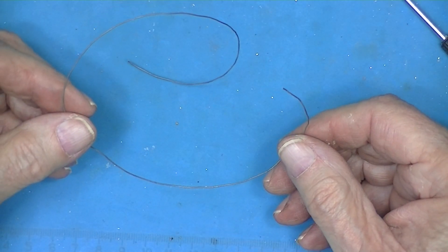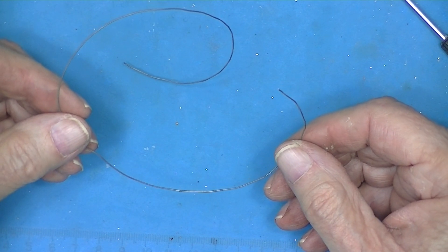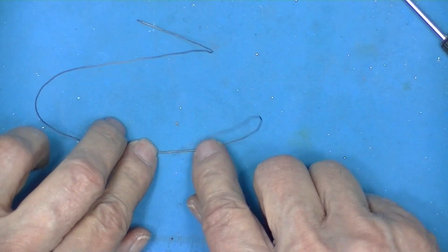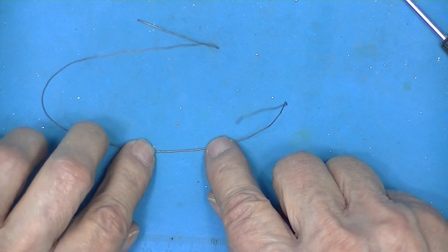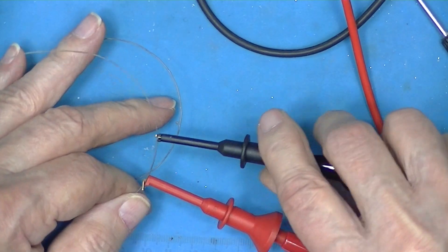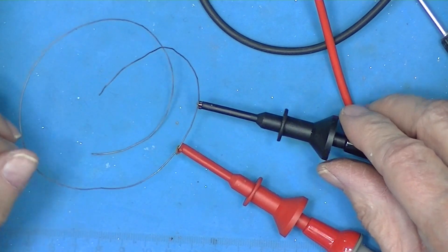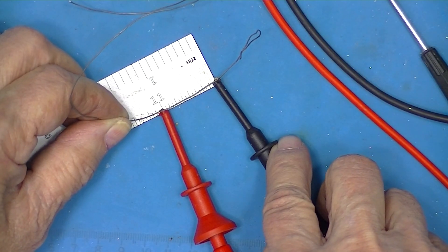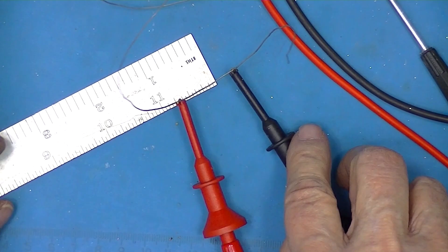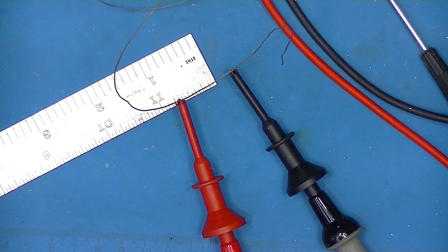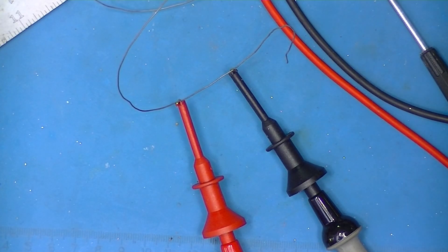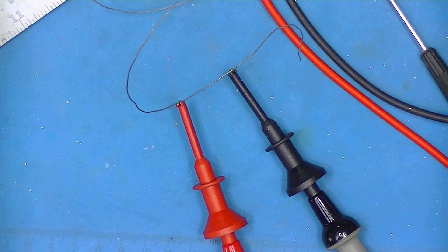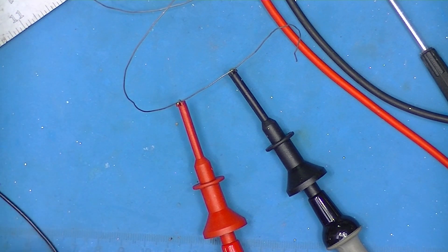So how do we determine the resistance per inch or per foot of this wire? I don't think that we can just put two probes on it like this and measure the resistance. We'll see what it says anyway. So they're about an inch apart and read 0.41 ohms.